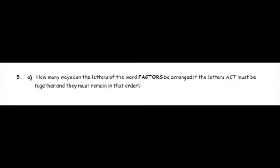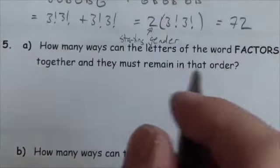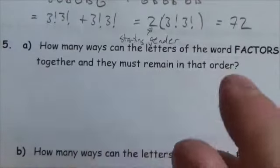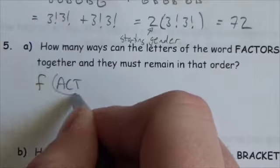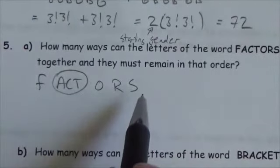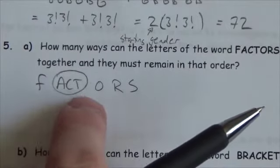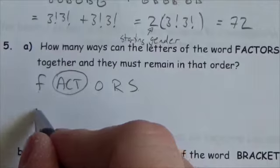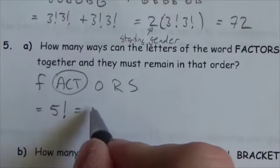How many ways can the letters of the word FACTORS be arranged if the letters ACT must be together and remain in that order? Since ACT is fixed as one object, the objects I'm free to permute are F, [ACT], O, R, S — that's five objects. So the answer is 5 factorial, which equals 120.